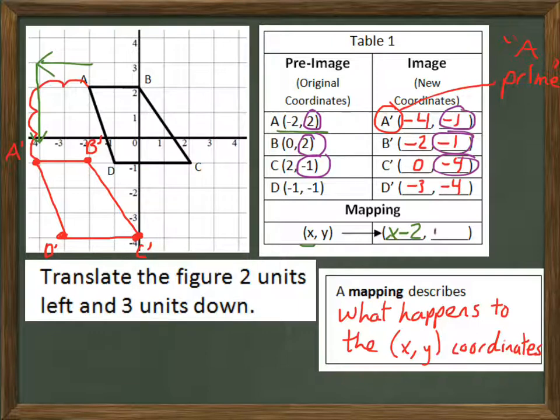So our mapping rule is going to be Y minus three for that part. Because we took all the Y coordinates and we subtracted by three. That's in accordance with how we moved the figure three units down, which is negative in the Y direction. Down is negative, so that means we're going to have Y minus three.